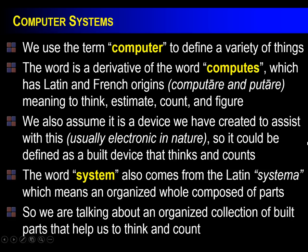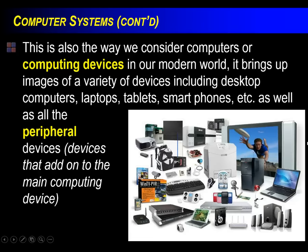The word 'system' is also an old word that comes from the Latin 'systema,' which meant an organized whole composed of parts. So parts creating a whole is what a system is. What we're talking about here is a bunch of parts organized into a whole to help us think and count. It's a pretty broad term — from laptops, tablets, smartphones, gaming systems, peripherals, printers, to virtual reality machines — all kinds of devices fall under this umbrella called a computer system.